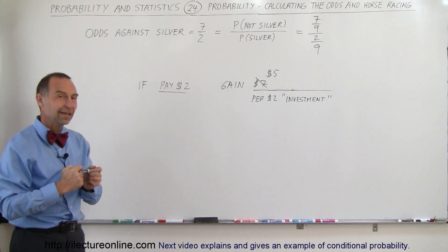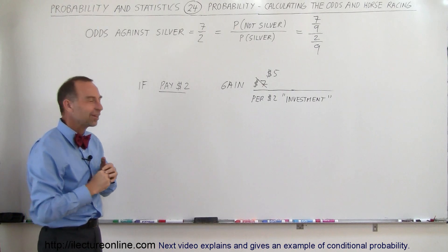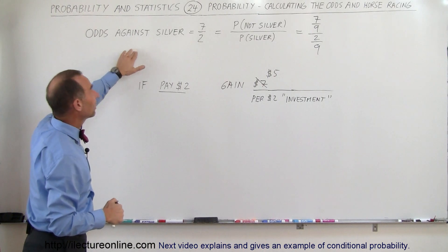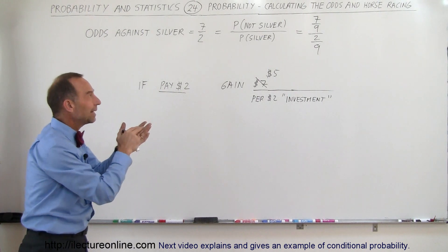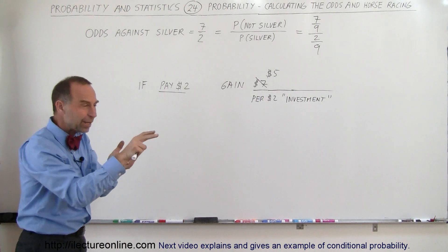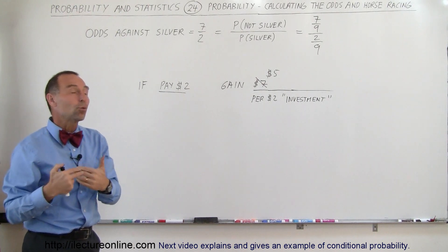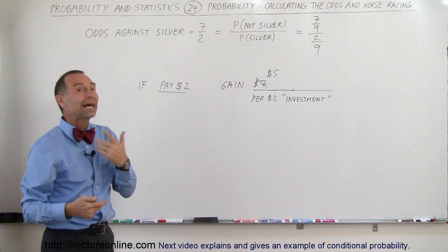So, again, it's not as easy to make money on horse racing as it used to be. So, again, the way we do that, odds against, that simply means the ratio of the probability of Silver not winning divided by Silver winning. The bigger the odds, the less likely they are to win, the smaller the odds, the more likely they are to win.